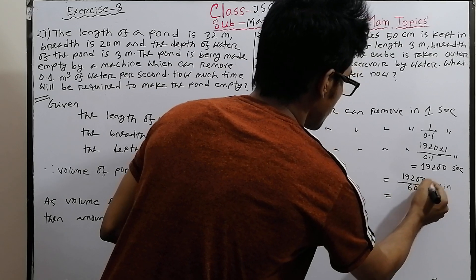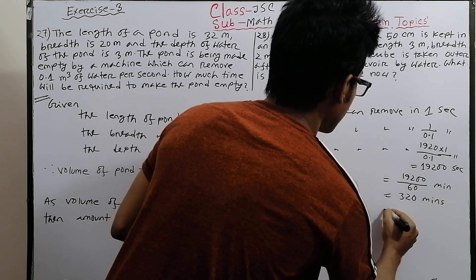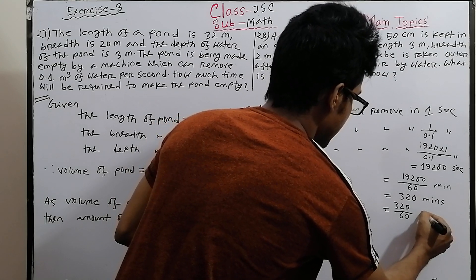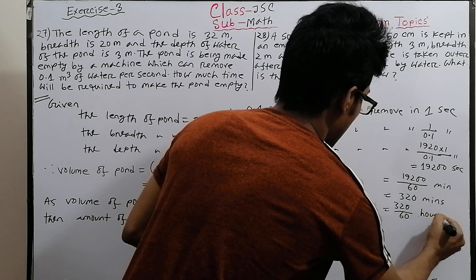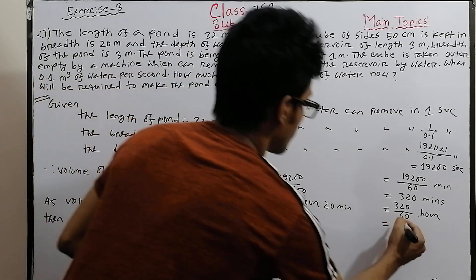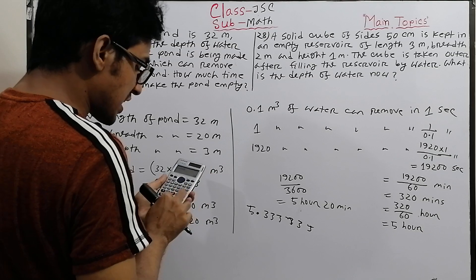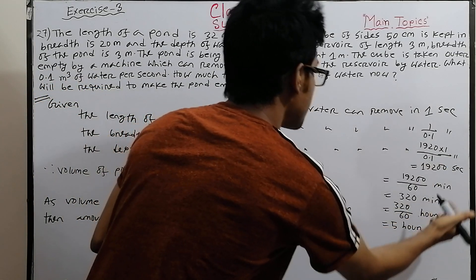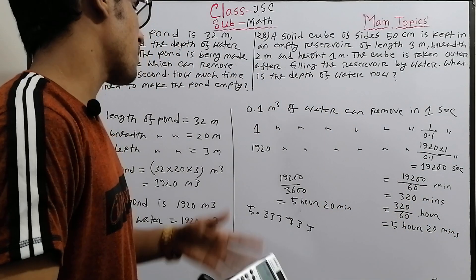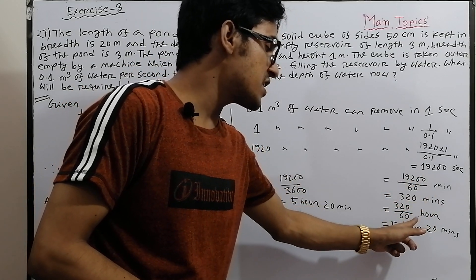The decimal part is 0.333... We multiply 0.333... by 60 to convert to minutes. So 0.333... into 60 equals 20 minutes. Therefore the total time is 5 hours 20 minutes. Dividing 320 minutes by 60 also confirms we get 5 hours 20 minutes.